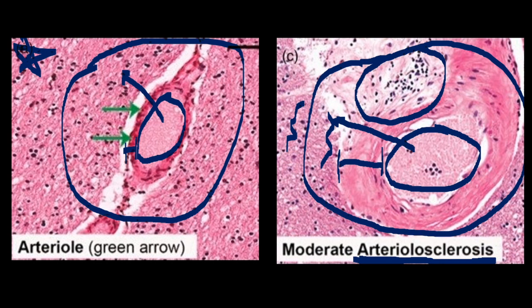Arteriolar sclerosis can be graded on its severity. This here is what we deem to be a moderate arteriolar sclerosis. It is graded from mild to severe, with this image showing moderate.